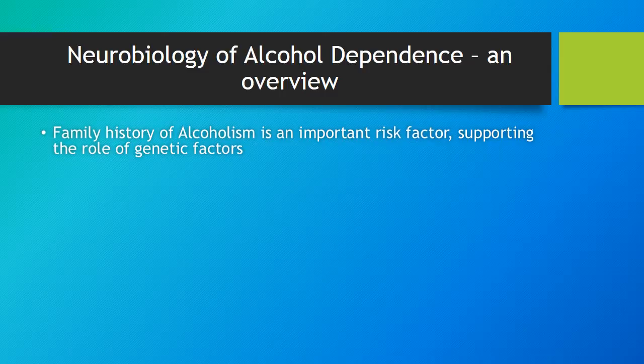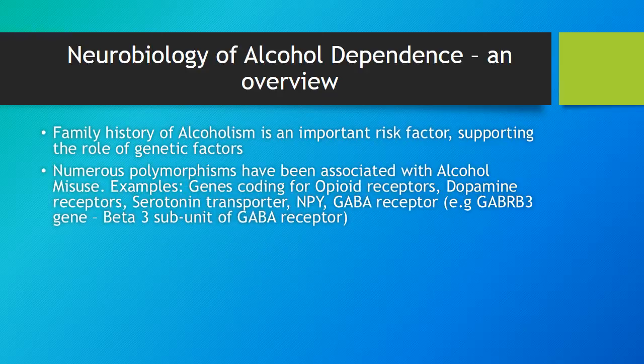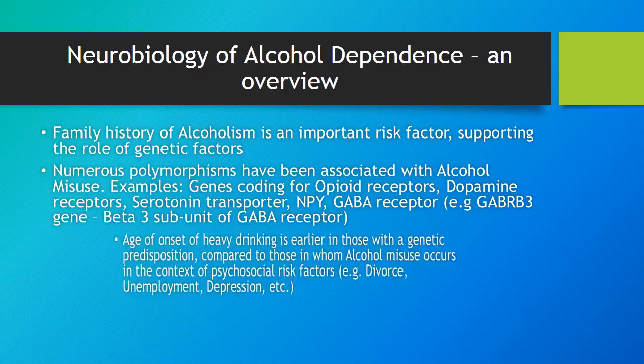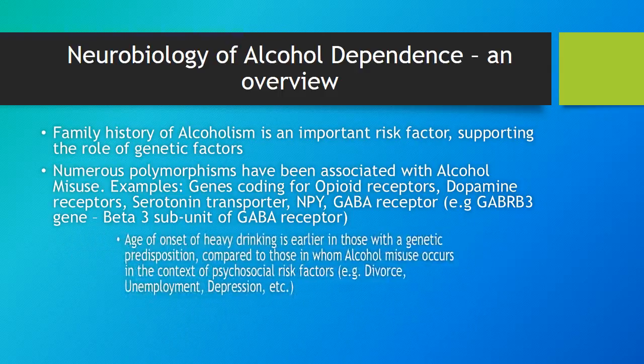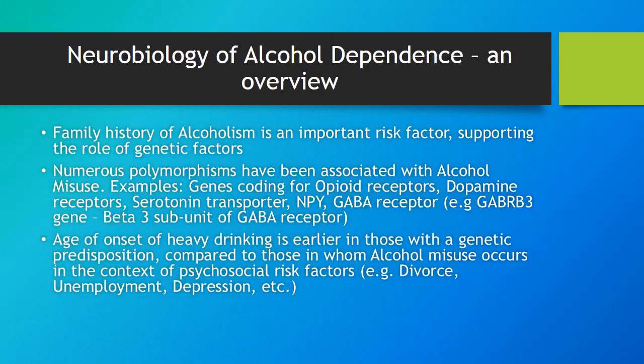Family history of alcoholism is an important risk factor, supporting the role of genetic factors. Numerous polymorphisms have been associated with alcohol misuse. Age of onset of heavy drinking is earlier in those with a genetic predisposition compared to those in whom alcohol misuse occurs in the context of psychosocial risk factors.